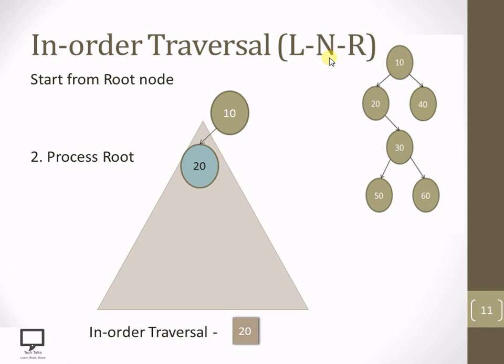And again, as in this in-order introduction, I am changing the color of the node which we are processing one by one. So with this you will come to know the sequence we are going to follow to traverse the tree in in-order. So after processing 20, we have processed the left which was absent, then the root node which is 20, and now we are supposed to move to the right.